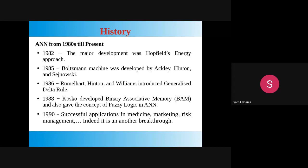From 1982 to the present: in 1982, Hopfield's energy approach was a major development. In 1985, the Boltzmann machine was introduced by Ackley, Hinton, and Sejnowski. In 1986, Rumelhart, Hinton, and Williams introduced the generalized delta rules. In 1988, Kosko developed the binary associative memory (BAM) and introduced the concept of fuzzy logic in artificial neural network. In 1990, artificial neural network was successfully applied in medicine, marketing, and risk management — another breakthrough.